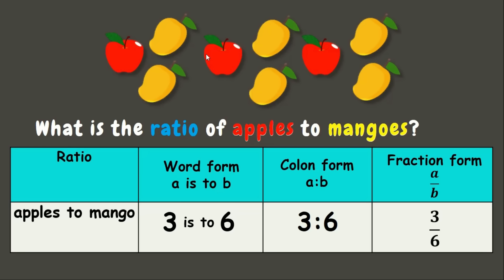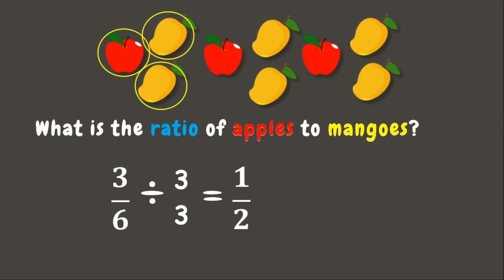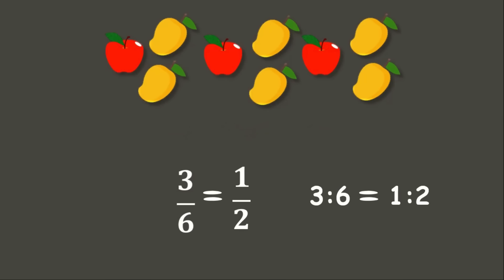Like fractions, ratios can be simplified into lowest terms as well. We have three over six, or three is to six. We can simplify the ratio by dividing both quantities by their greatest common factor. The greatest common factor of three and six is three. Dividing three by three and six by three gives us one is to two. This is an example of an equivalent ratio — three is to six is equivalent to one is to two.